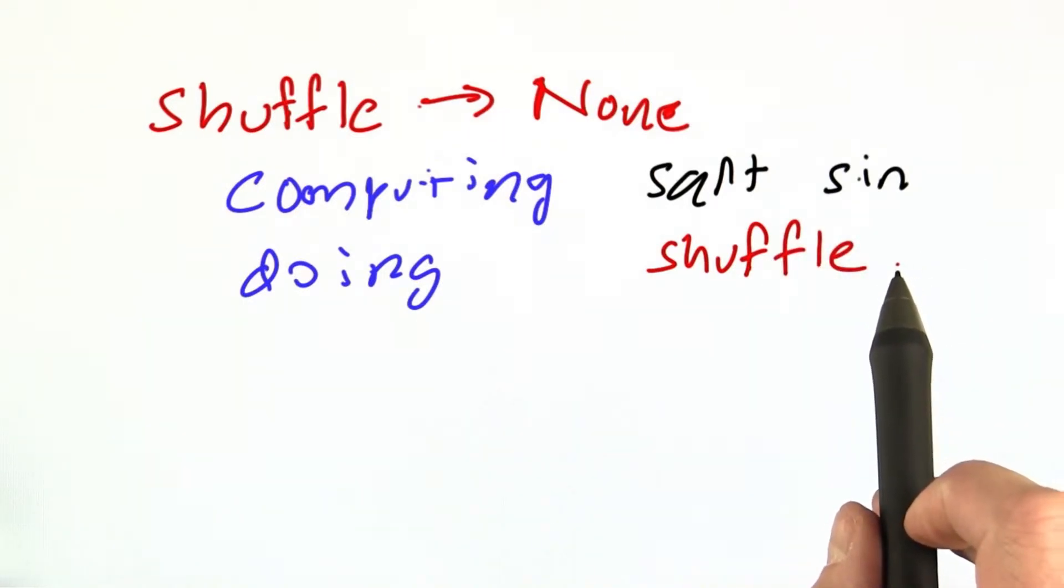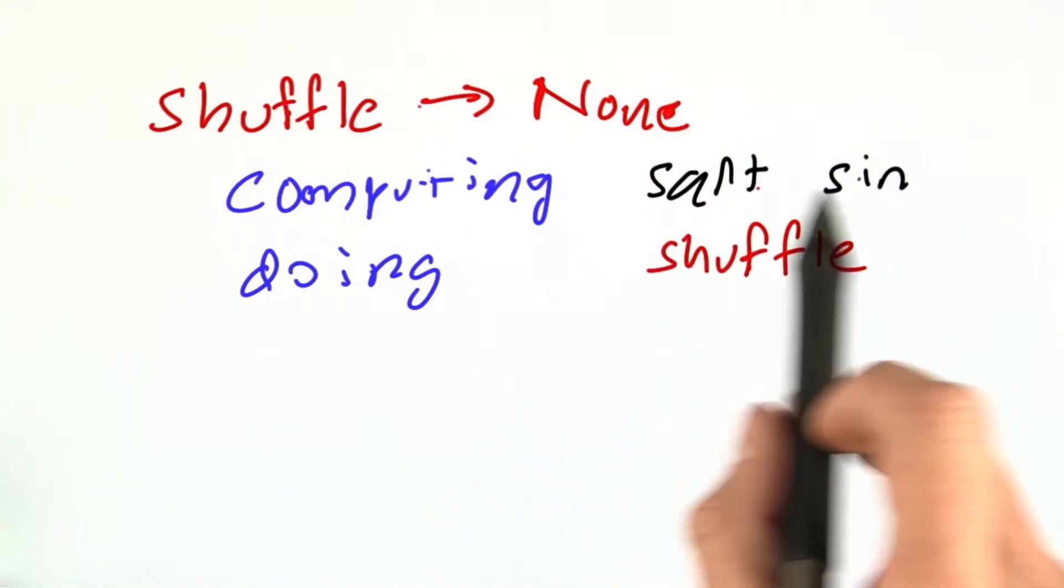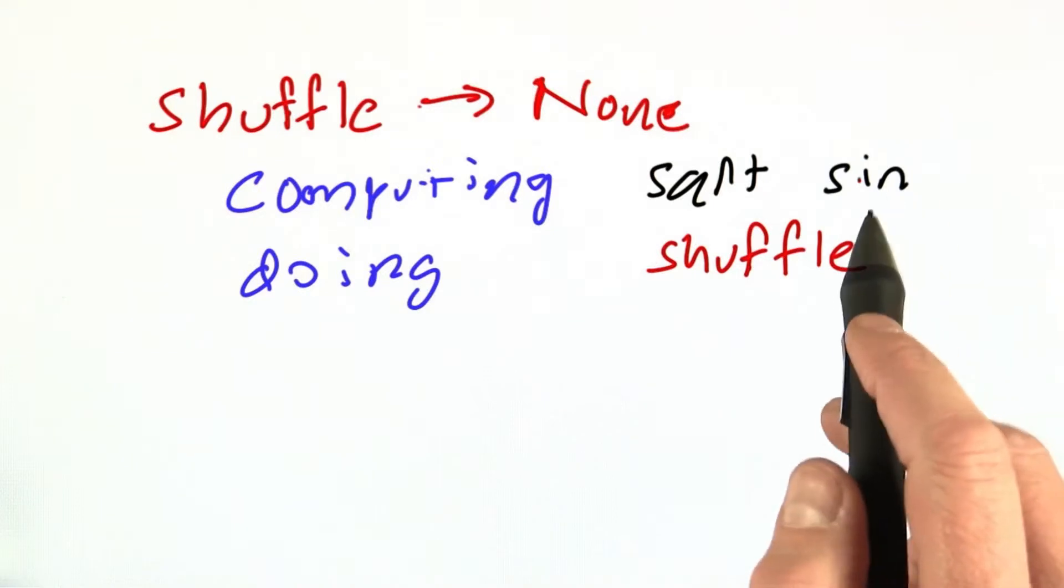They take the state of the world and do something to the state of the world rather than just compute a result. We talk of these functions that compute a result as pure functions and these that do something as impure.